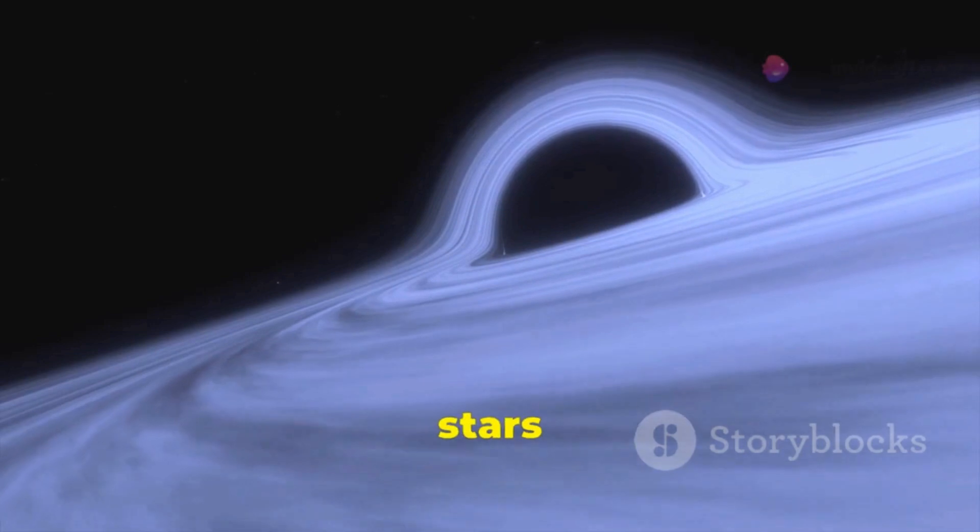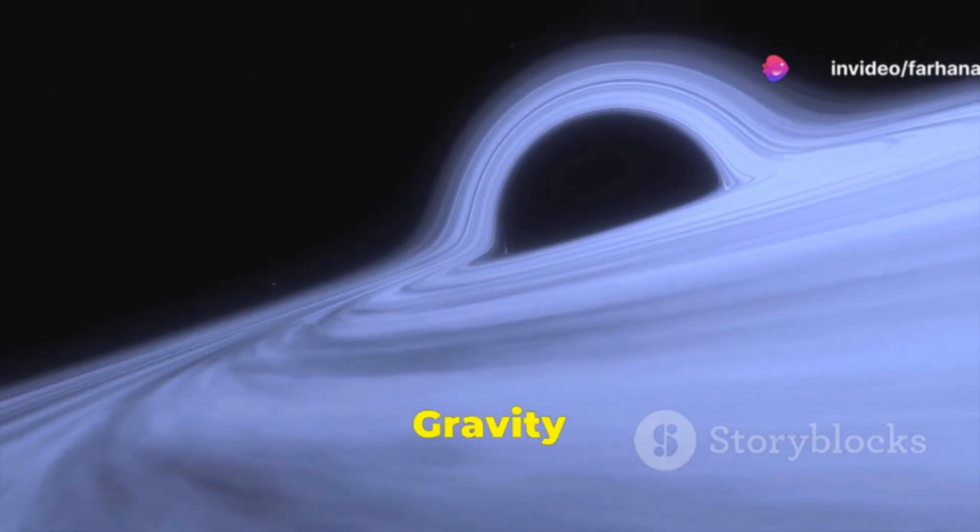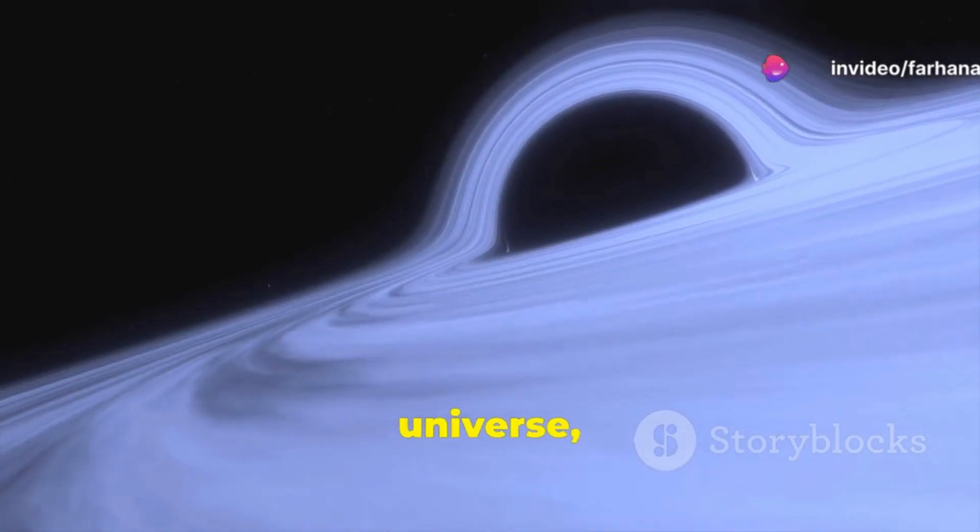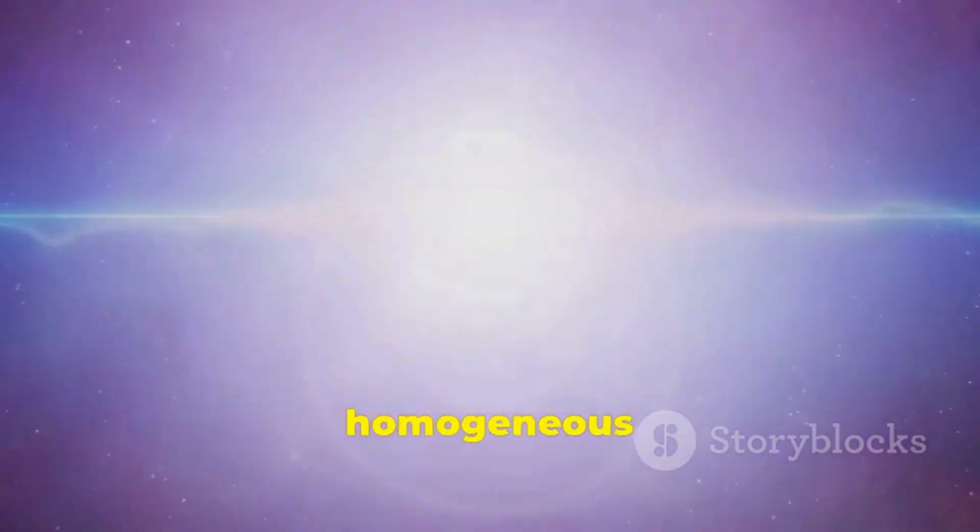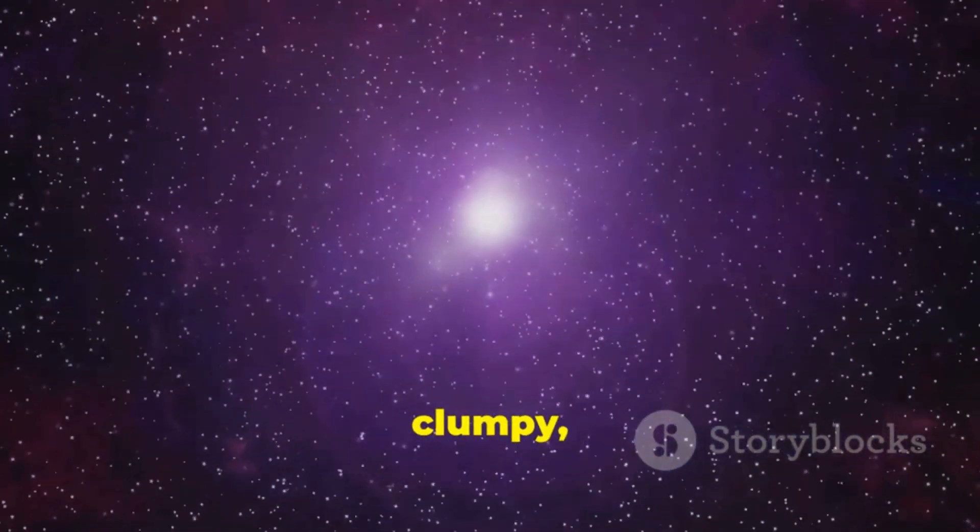They formed the first stars and galaxies. Gravity sculpted the universe, pulling matter together into vast cosmic structures. The early universe transitioned from a smooth, homogeneous state to a clumpy, structured one.